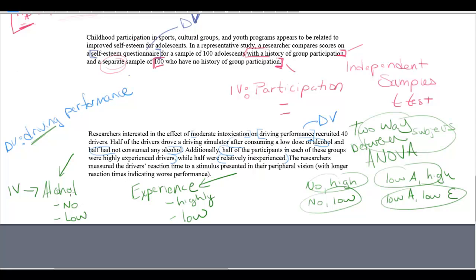Our null hypothesis is that alcohol and experience have no effect on driving ability — always a statement of no difference. The alternative hypothesis is that alcohol and experience do have an effect on driving ability. This is what I'm hoping to see from you all in your homework this week. If you have any questions, please send me an email or contact our course assistant. Good luck, and we'll see you next week.